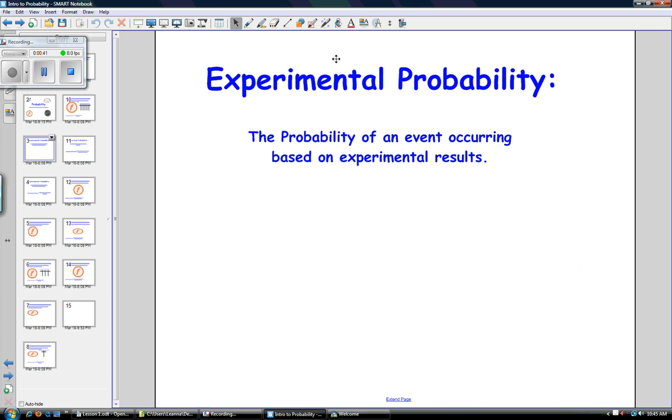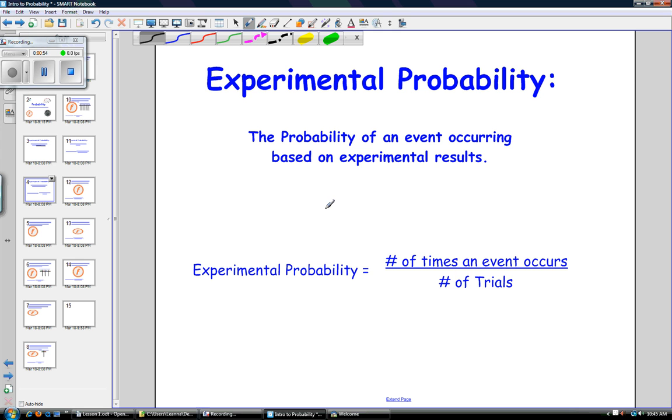There are two kinds of probability. The first is experimental probability, and this is probability that is based on experimental results. We write experimental probability as equal to the number of times an event occurs over the number of trials that we do.